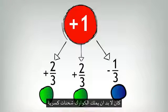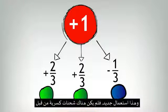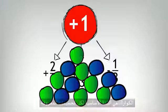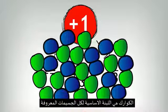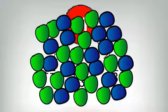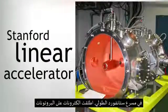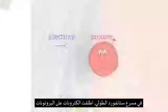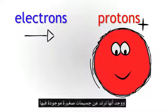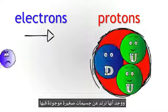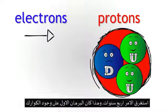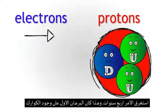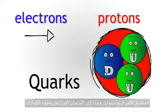In order for their calculations to work, these quarks needed to have a fractional charge. This was a new concept, as fractional charges had never been seen before. Quarks are the fundamental building blocks of all particles that we know of. At the Stanford linear accelerator, electrons were fired at protons and found to bounce off tiny particles inside them. It had taken four years, but this was the first evidence for the existence of quarks.